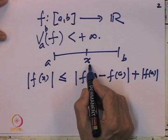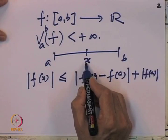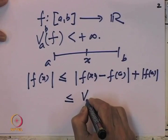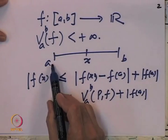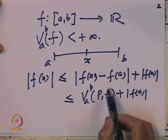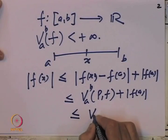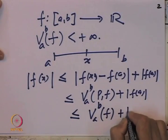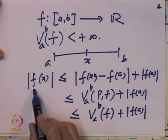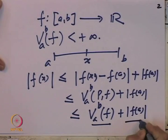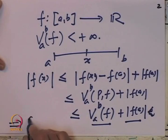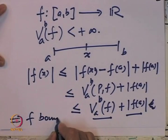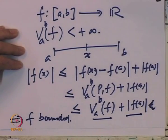We can bound |F(x)| by |F(b) − F(x)| + |F(x) − F(a)|. The first term is at most the variation of F over the partition with points a, x, and b, which is at most the total variation V(a,b) of F, plus |F(a)|. So if F is a function of bounded variation, then |F(x)| ≤ V(a,b) + |F(a)|, which is finite. Hence every function of bounded variation is also a bounded function.